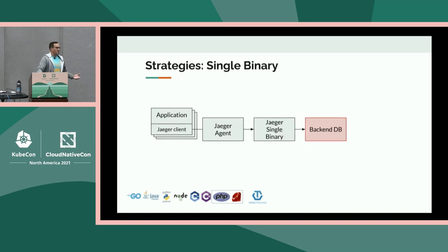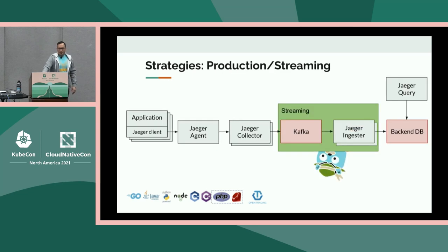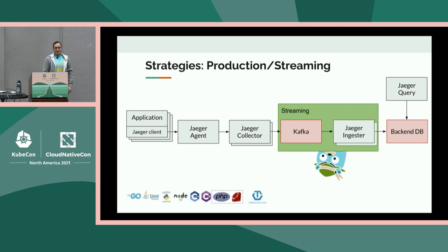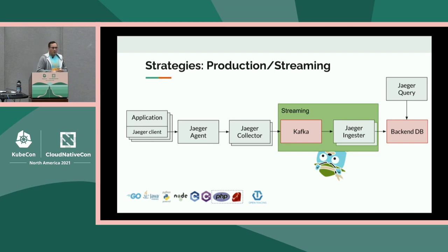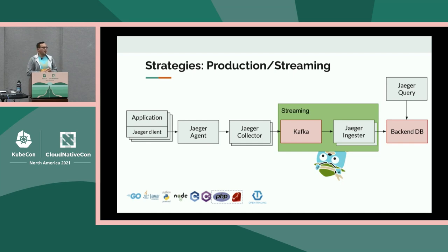The second strategy is production, which includes everything except streaming. This means we start deploying a collector, which allows us to scale out data ingestion — essentially supporting more Jaeger agents and more infrastructure sending trace data. We'll talk more about the backend database and Kafka in production mode because there are options for those. Jaeger query is also a service that helps scale out the UI. The operator does the work to deploy, scale, and manage all of this.